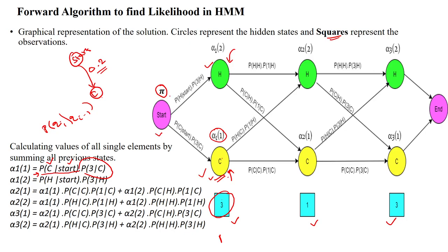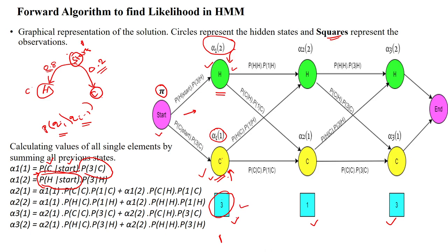There may also be a possibility of a hot state, indicated with alpha 1,2. We assume the person is moving from start state to hot state. The probability to move into the hot state is 0.8. This is indicated by probability of hot given start — current state is hot, previous state is start. After reaching the hot state, he will consume three ice creams, so we multiply by probability of three given hot.